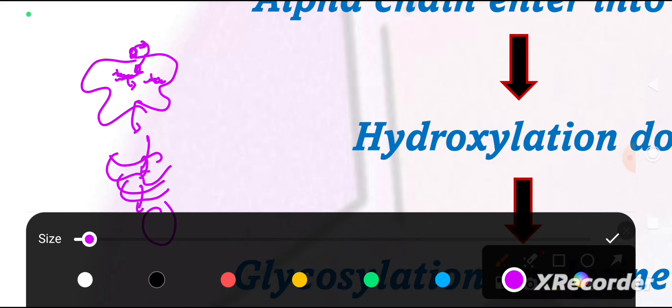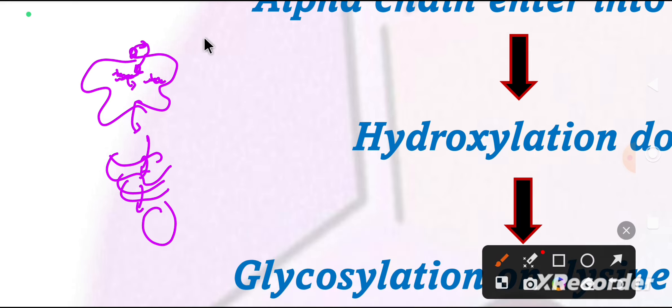Where will it release from the cell? It will be removed from the cell through the plasma membrane through exocytosis. The tropocollagens will secrete out of the cell.